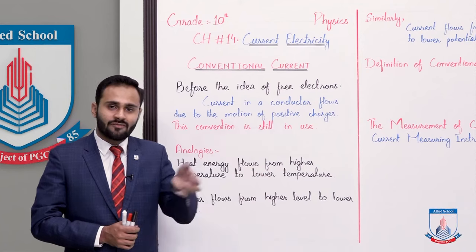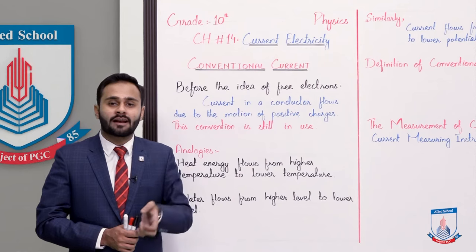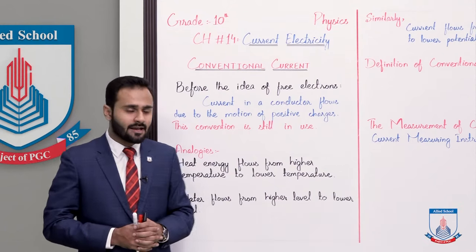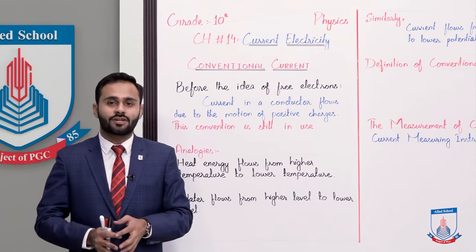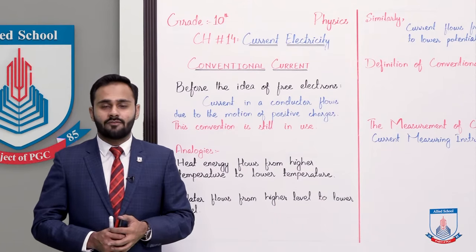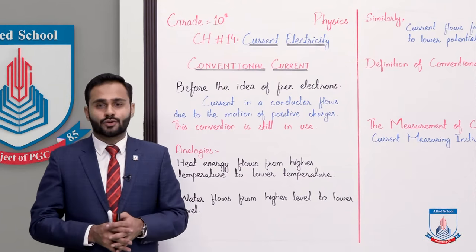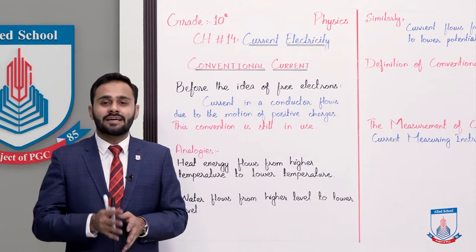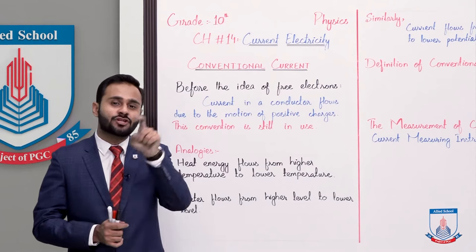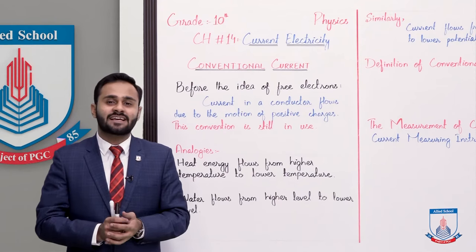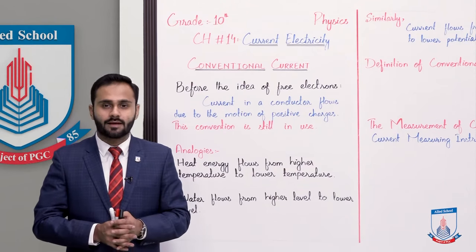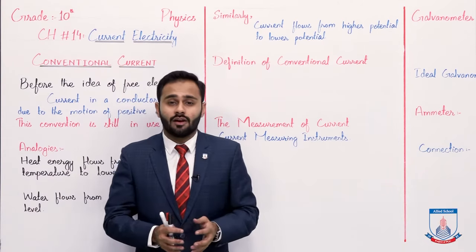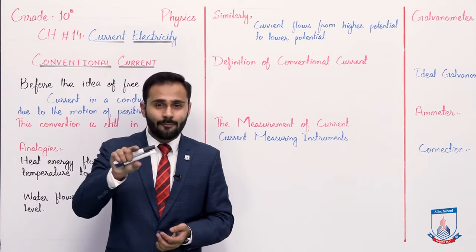If the temperature is the same, then heat flows from a higher level to a lower level. Similarly, water flows automatically from a higher level to a lower level. By analogy, because the positive terminal is at higher potential and the negative terminal is at lower potential, current flows from higher potential to lower potential — that's why we call it conventional current.